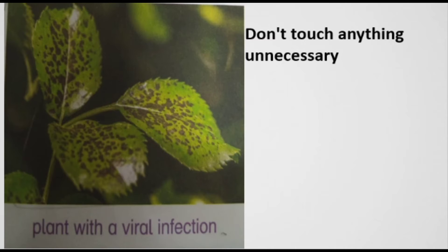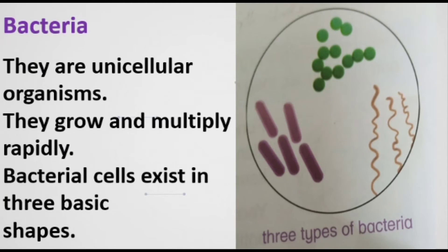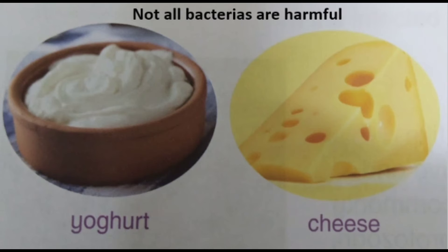Let's start learning about bacteria. What is bacteria? Bacteria are unicellular organisms. They grow and multiply rapidly. Bacterial cells exist in three basic shapes — you can see in the picture that there are three types of bacteria. They can cause illnesses like typhoid, meningitis, and pneumonia. However, not all bacteria are harmful. Some of them are very useful for humans, other animals, and plants.